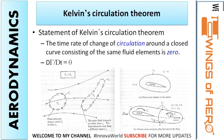Now comes the Kelvin Circulation Theorem. It states that the time rate of change of circulation around a closed curve consisting of the same fluid elements is zero. That means the change in circulation with respect to change in time will be zero. Remember, this is the Kelvin Circulation Theorem.